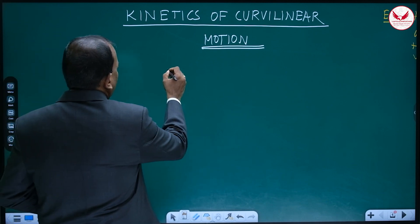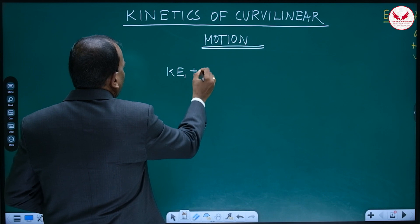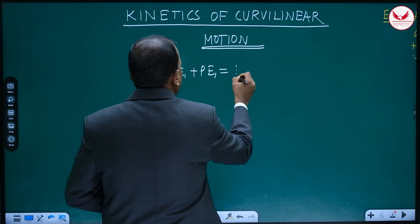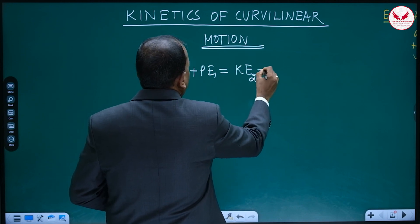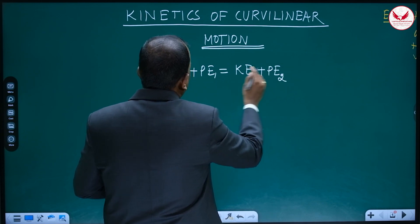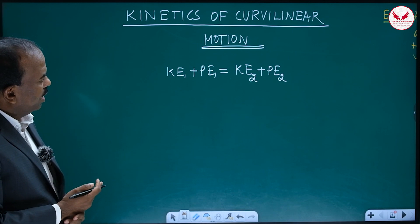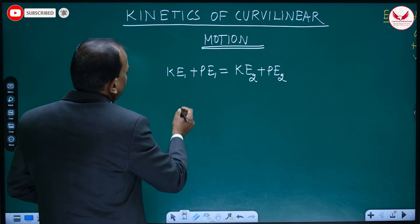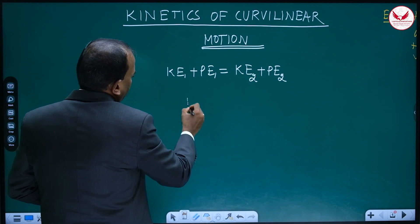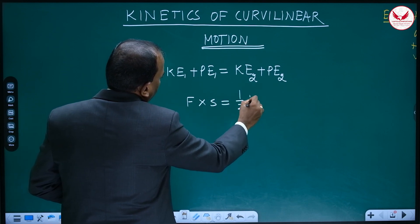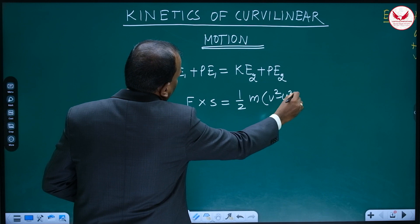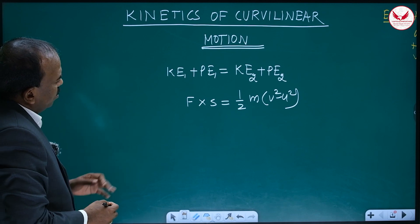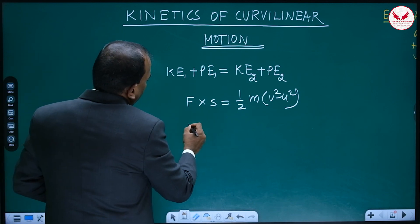Conservation of energy means KE1 plus PE1 — kinetic energy at position 1 plus potential energy at position 1 — is equal to KE2 plus PE2. If a spring is involved, there may be spring energy terms as well, or we can use the work-energy principle: F into S equals half M times final velocity squared minus initial velocity squared, meaning work done equals change in kinetic energy.